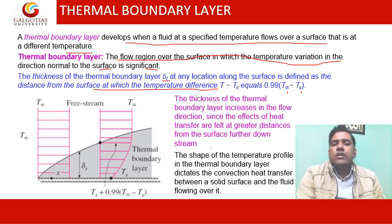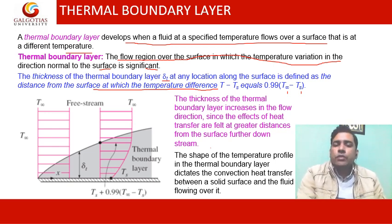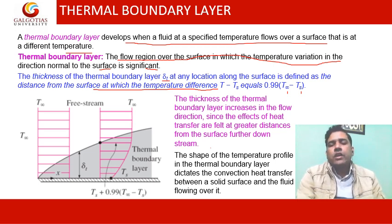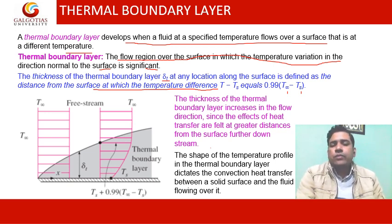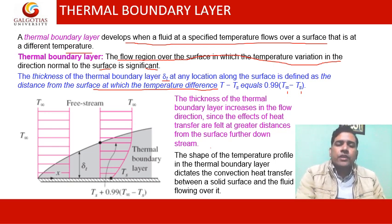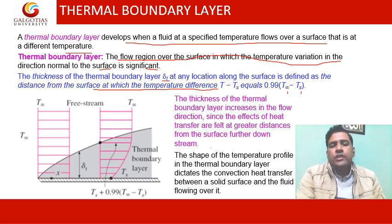The effect of heat transfer can be felt across the thermal boundary layer. The shape of the temperature profile in the thermal boundary layer dictates the convection heat transfer between a solid surface and the fluid flowing over it. The concept of the thermal boundary layer is similar to the concept of the fluid boundary layer; the only difference is the existence of a temperature gradient, and the problem is dealt in almost a similar fashion.